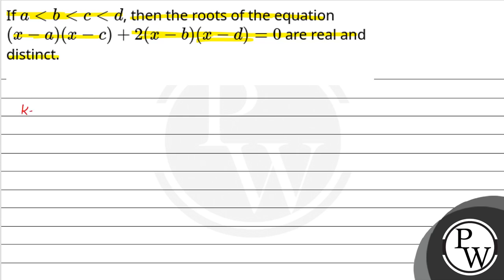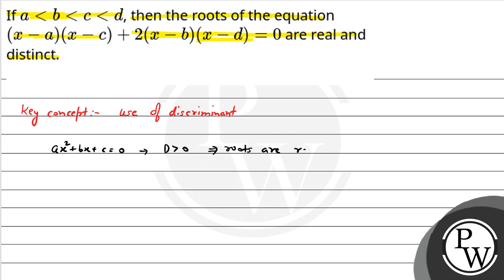So here the key concept used in this question is the use of discriminant to find the solutions, whether they are real or imaginary. Just as we know that for a quadratic equation Ax² + Bx + C = 0, if the discriminant is positive, greater than 0, this implies roots are real and distinct.